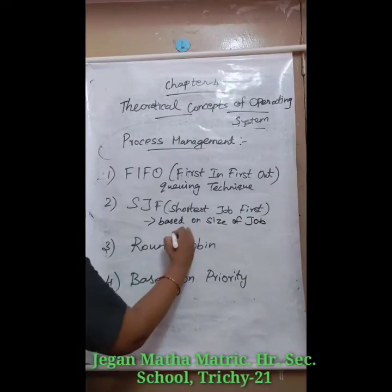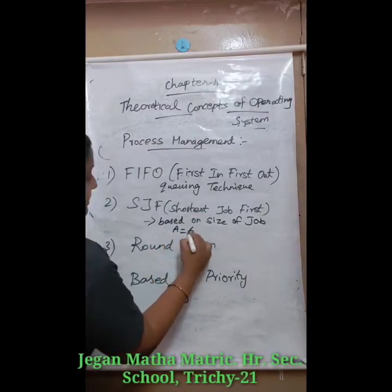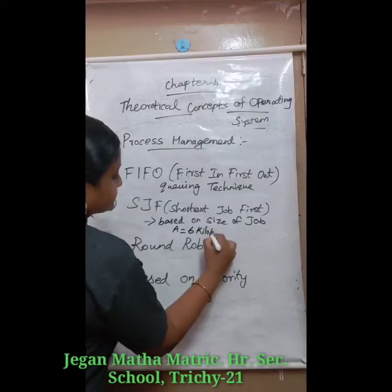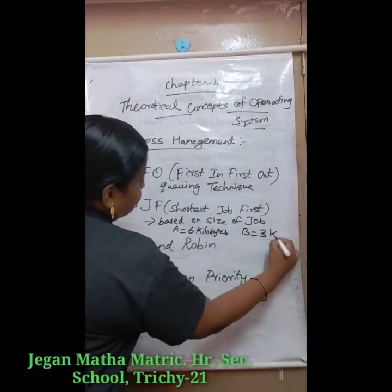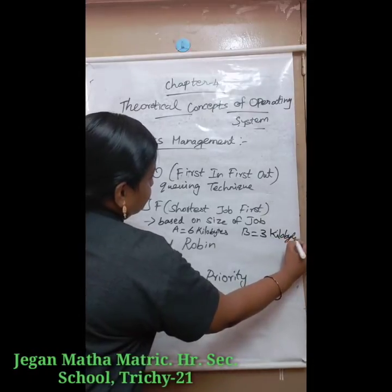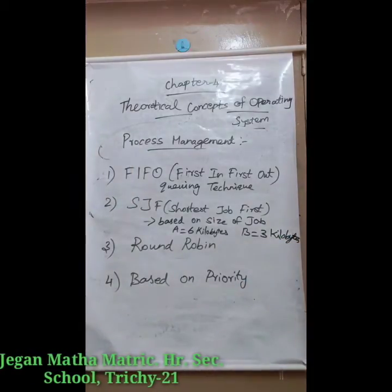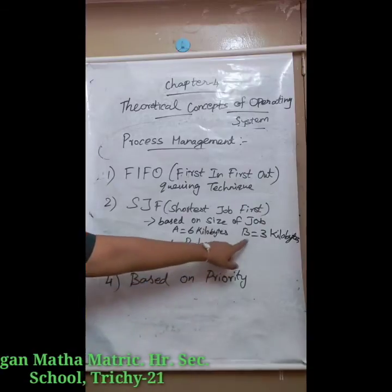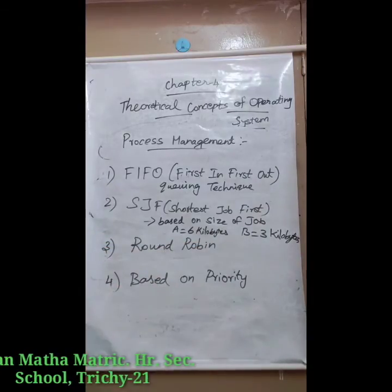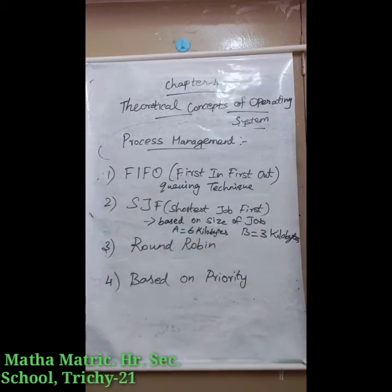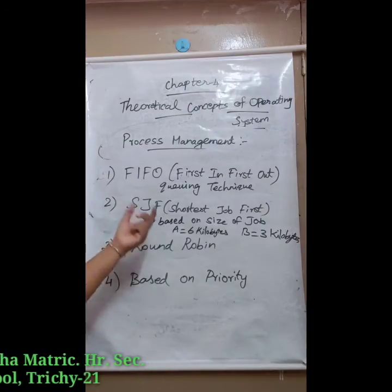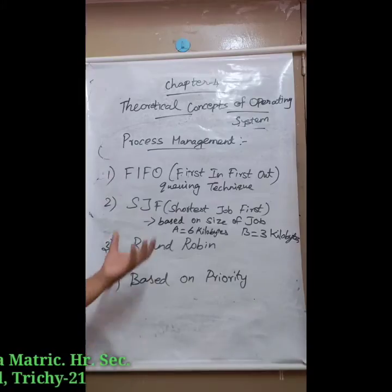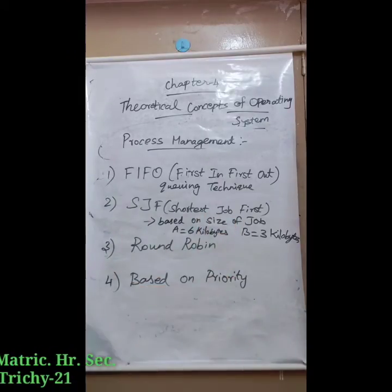For example, if job A has 6 kilobytes and job B has 3 kilobytes, then job B will be assigned first, then job A will be processed. So here, we do shortest job first. Based on the size, whichever has the lowest size gets the highest priority and that work is done first.